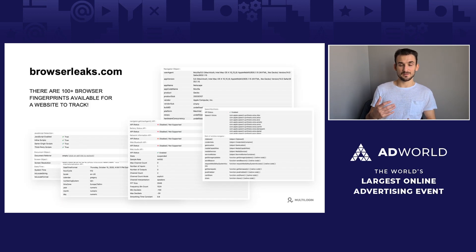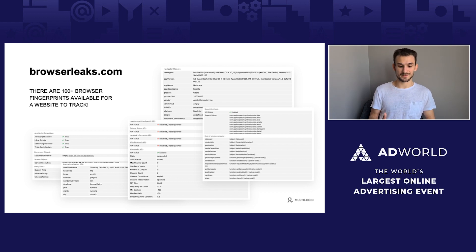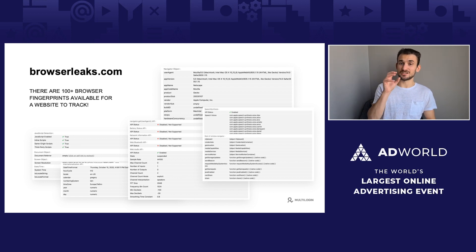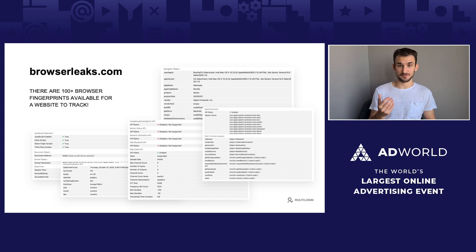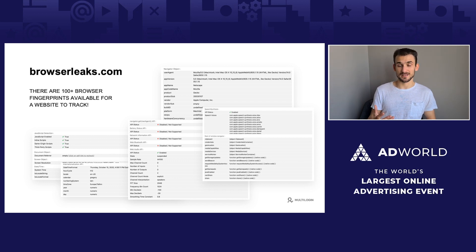In theory, there are over 100 browser fingerprints available for a website to track, and each one of these reveals some information about you. However, the good news is that you don't need to know about all of them. You just need to understand a handful of them to successfully scale your Google and Facebook ad accounts.